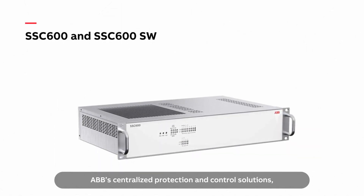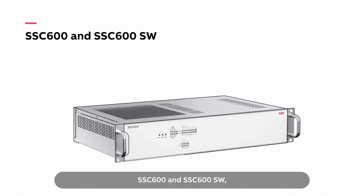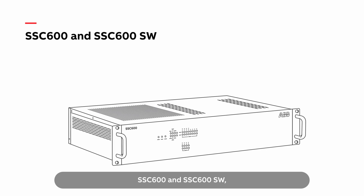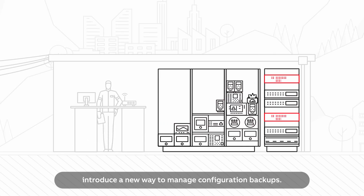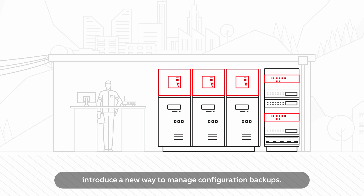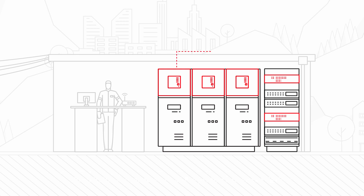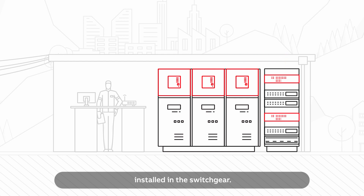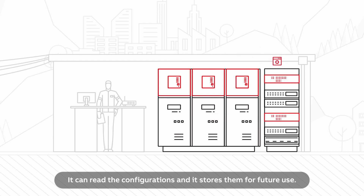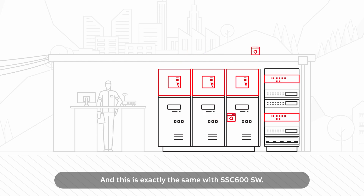ABB's Centralized Protection and Control Solutions and SSC600 software introduce a new way to manage configuration backups. The SSC600 is connected to all the protection related devices installed in the switchgear. It can read the configurations and it stores them for future use — and this is exactly the same with SSC600 software.